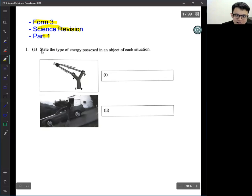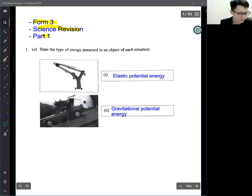For this one, state the type of energy possessed. There's a lot of energy - light energy, sound energy, gravity energy, electrical energy. For this one, we call it elastic potential energy. And for this one will be gravitational potential energy, because elastic has energy stored inside here.